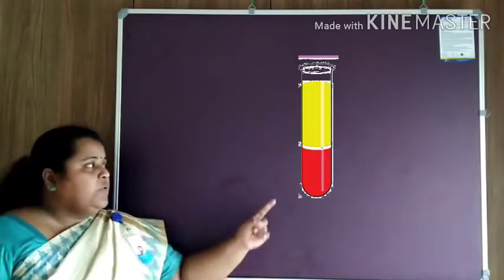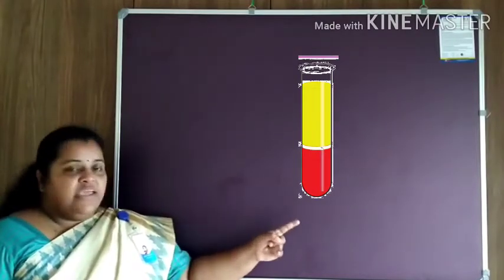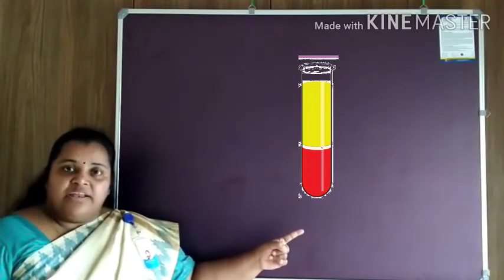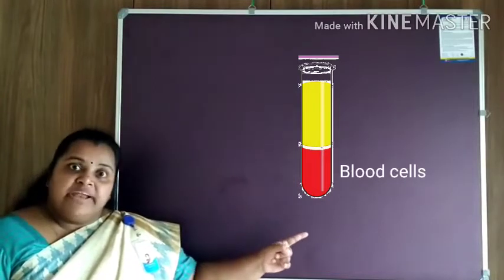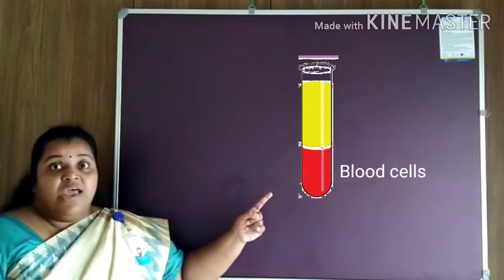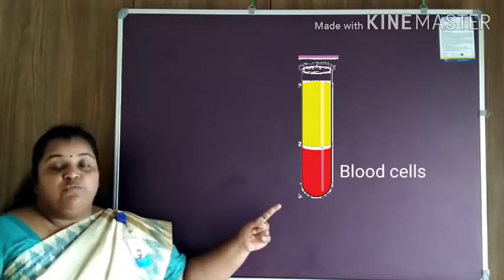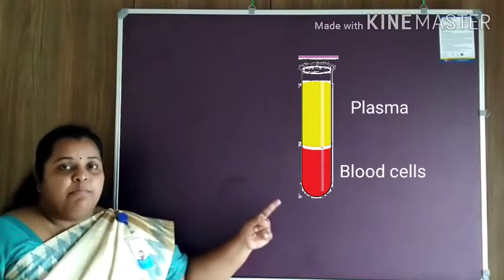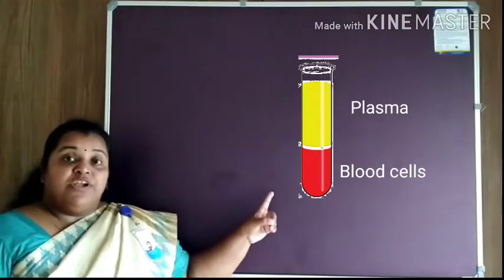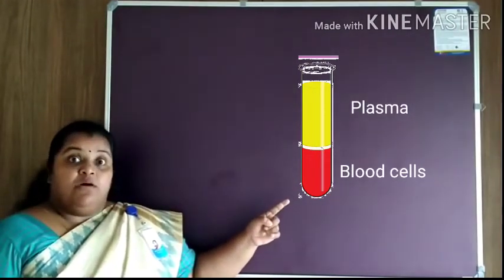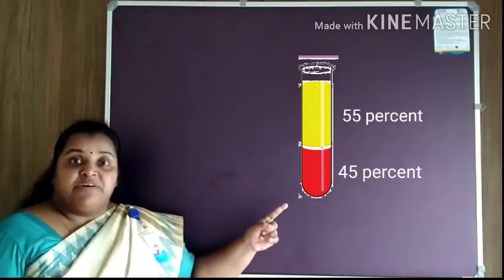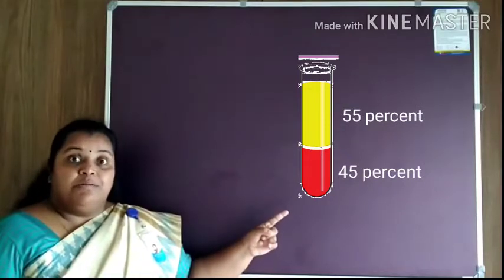We saw that there are two layers in the test tube. The lower layer is dark red in colour, which shows the presence of blood cells. In the upper layer, we can see a yellow coloured part which shows the fluid part of the blood, known as plasma. Above 45% of the blood constitutes the blood cells, and the remaining 55% constitutes the blood plasma.